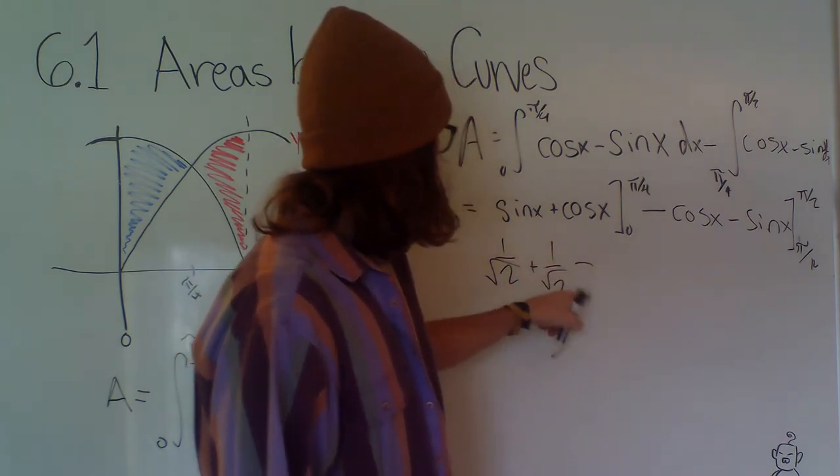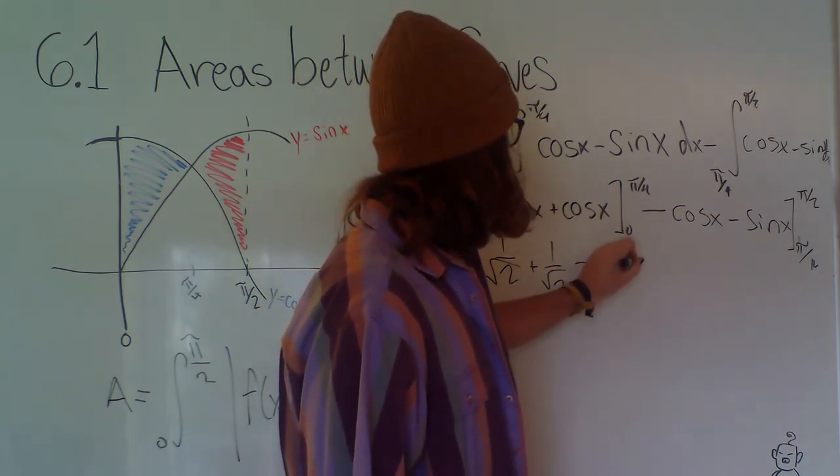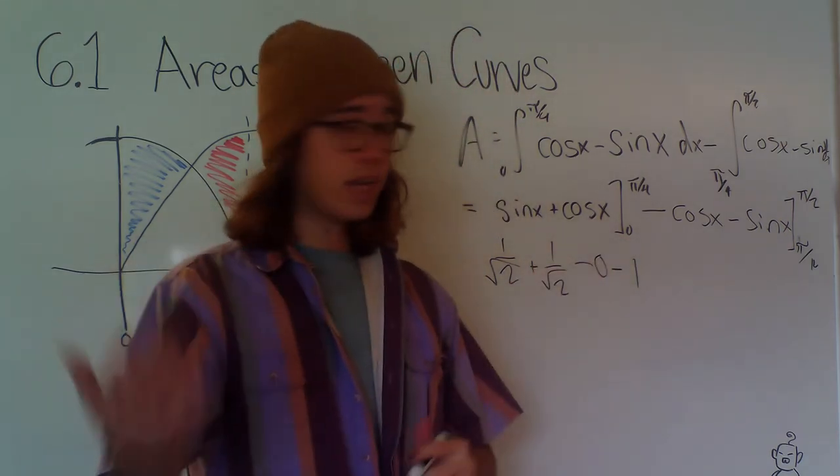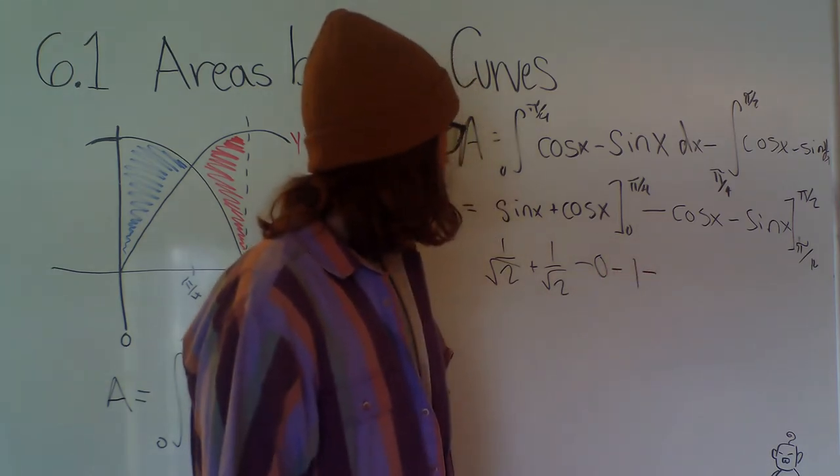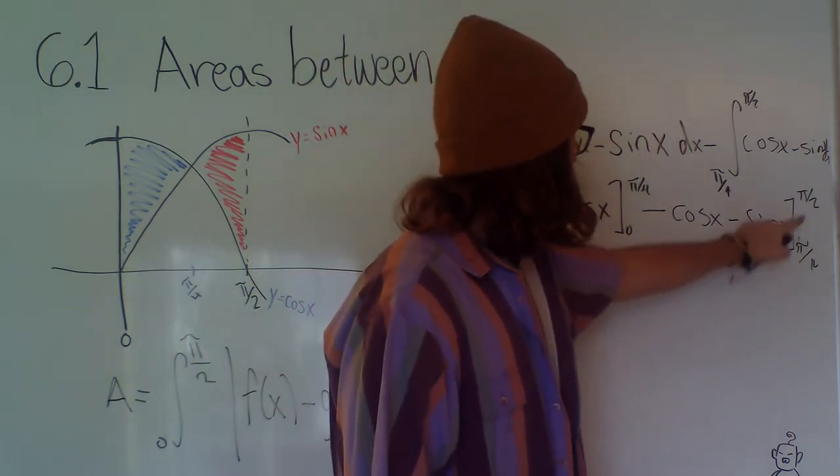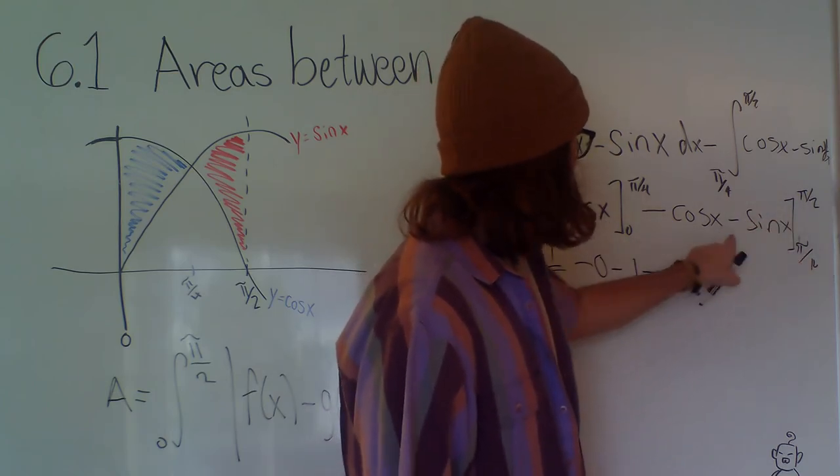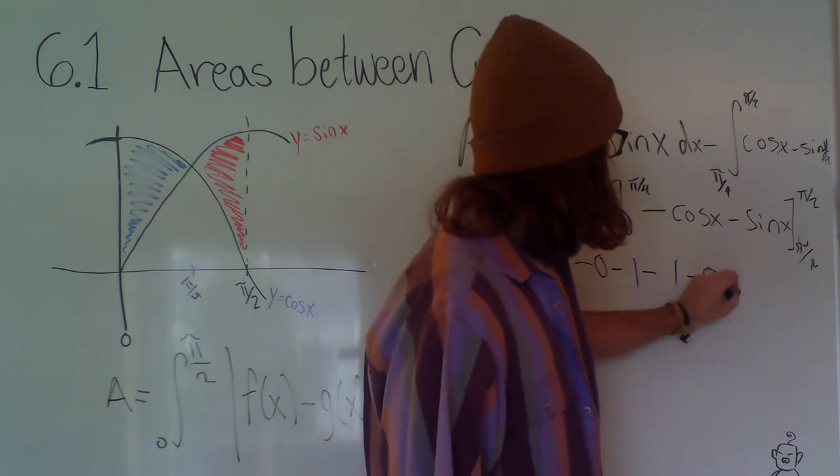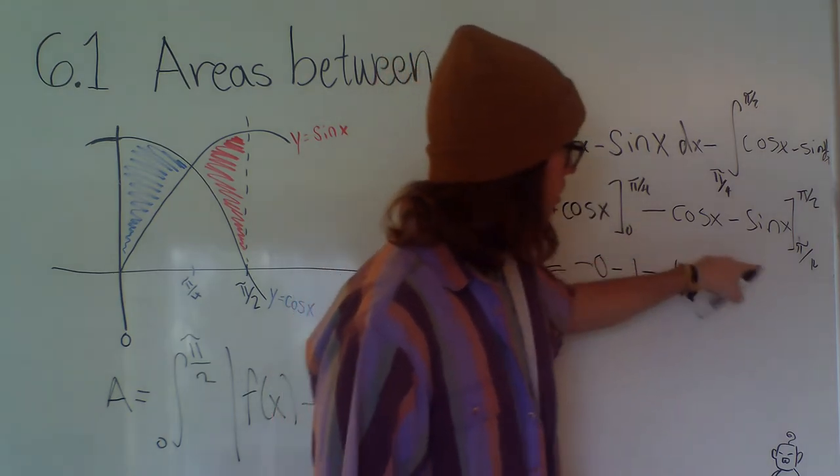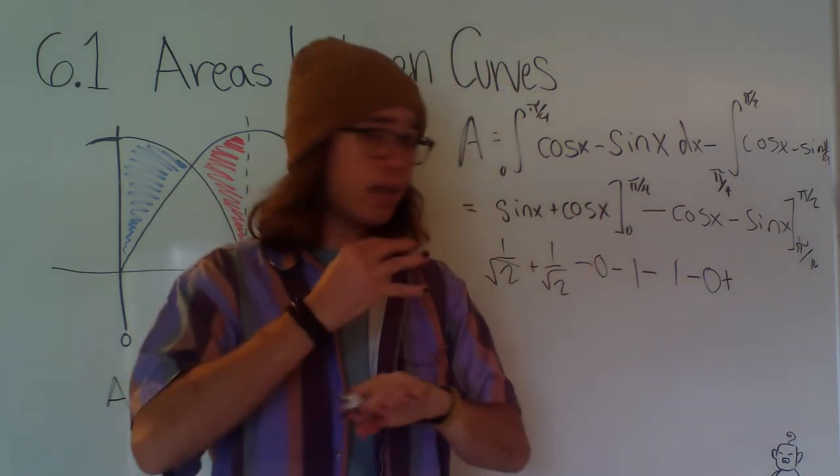Then we have to subtract, well, sine of 0 is 0, cosine of 0 is 1, and then subtract, so negative 1, minus cosine of pi over 2. So that would be minus another 1 minus another 0, and then now plus because these are negative and this bound now is the subtraction, so it becomes positive.